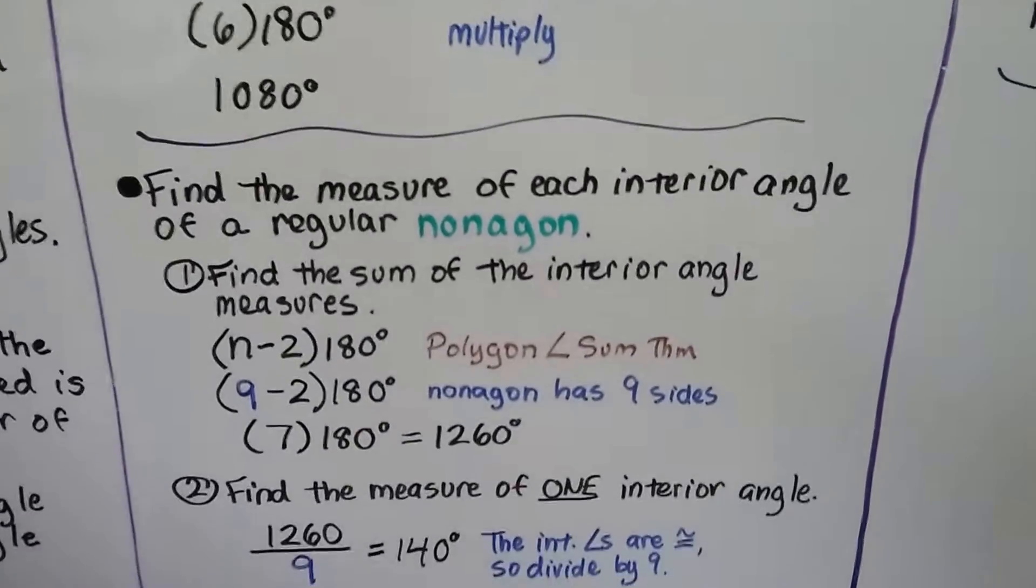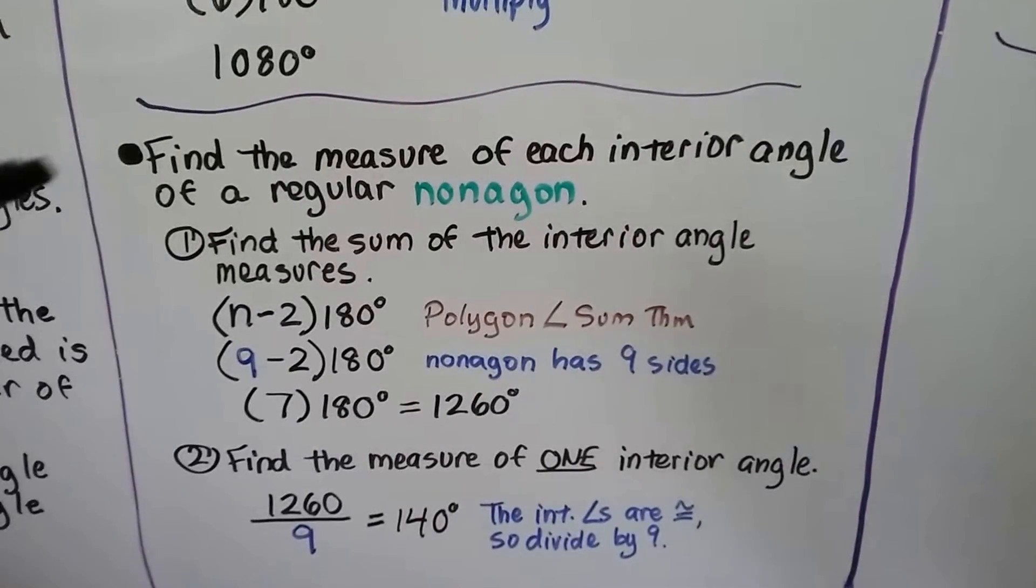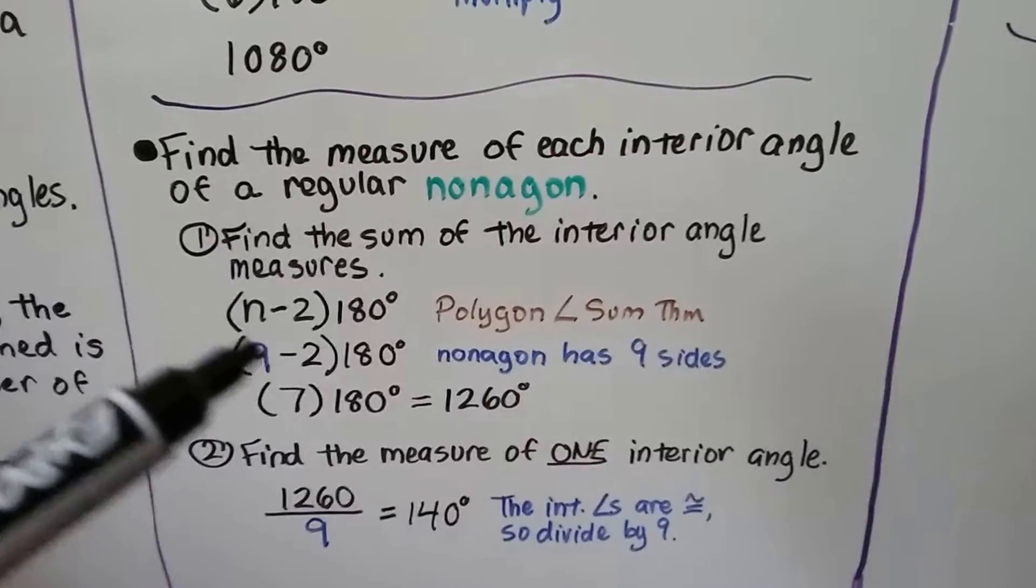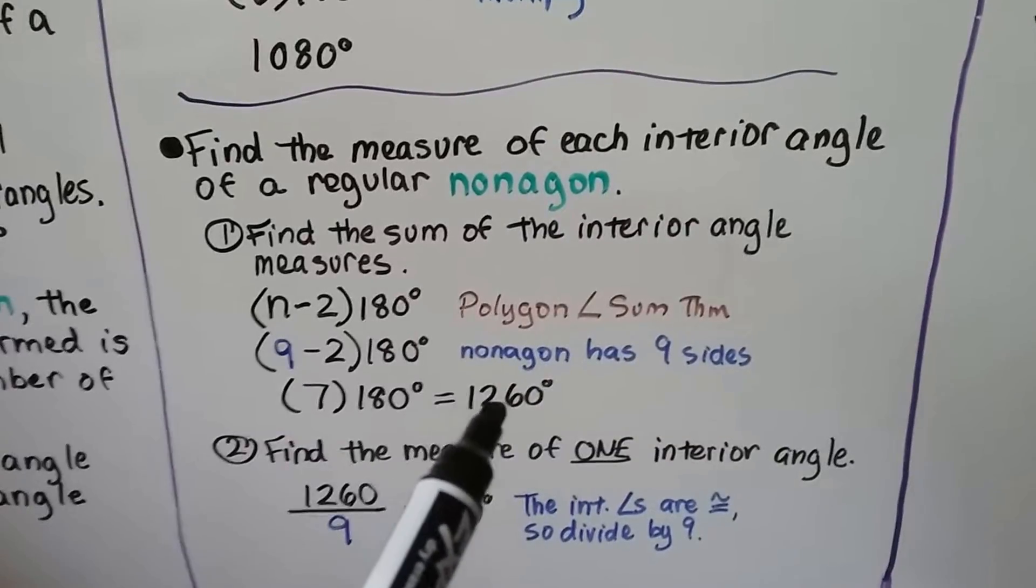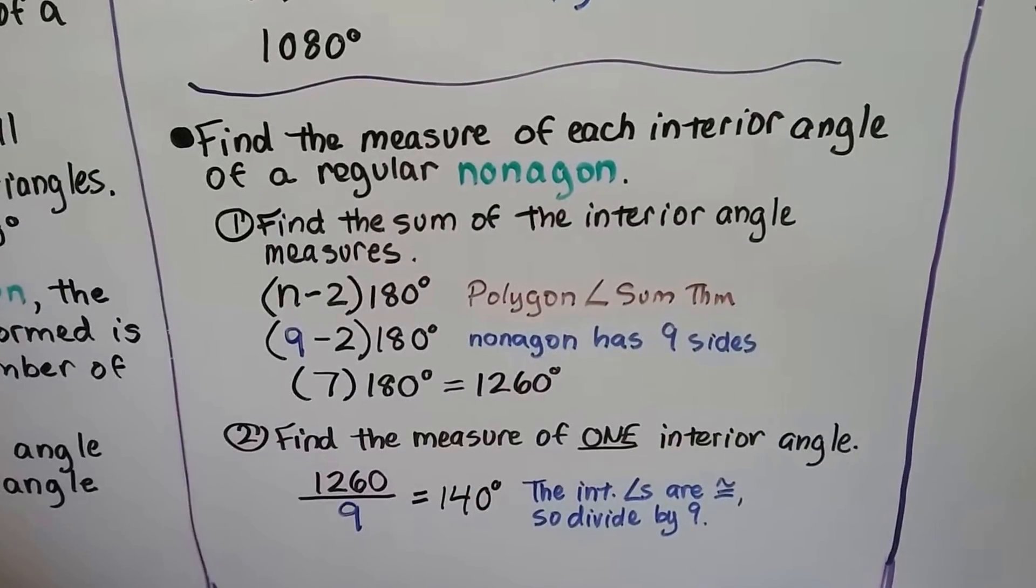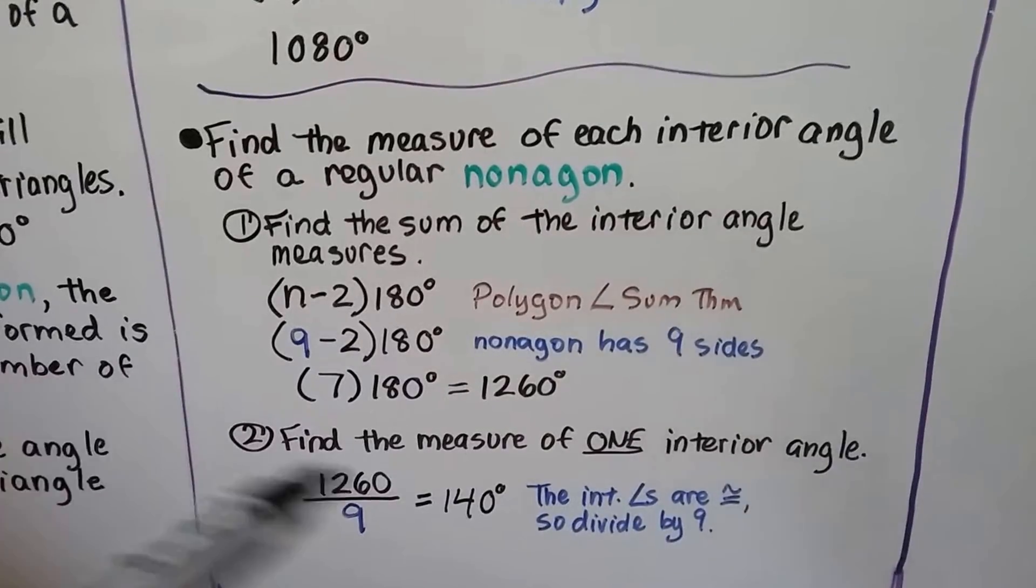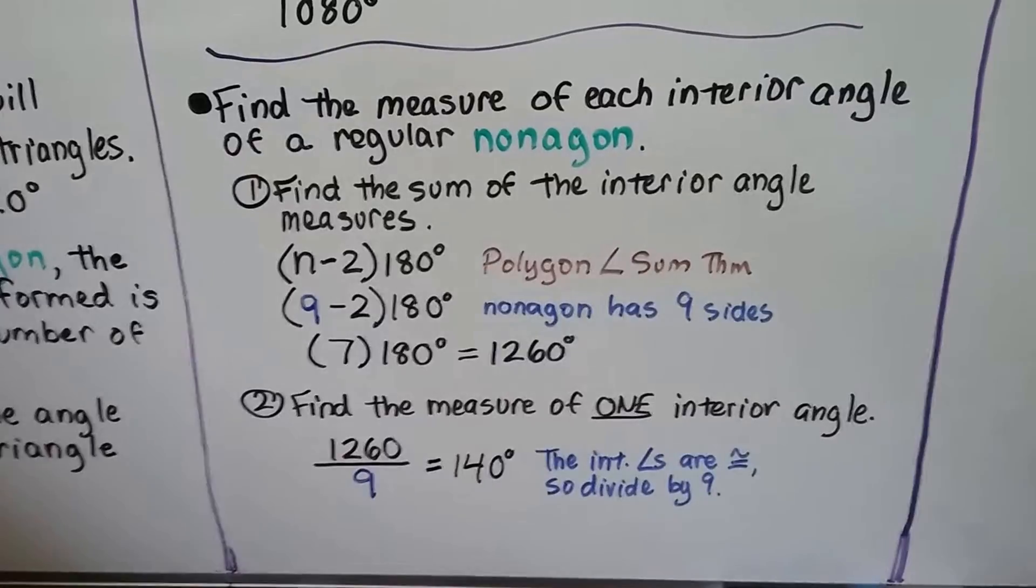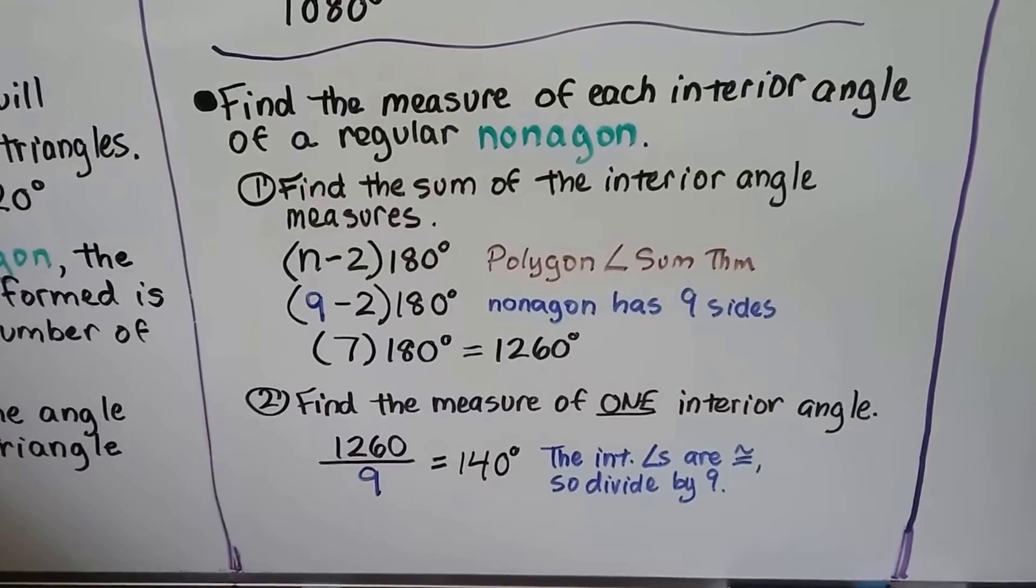We can find the measure of each interior angle of a regular nonagon. A nonagon has nine sides. First we find the sum of the interior angle measures using the polygon angle sum theorem. Nine minus two is seven, seven times 180 degrees gives us 1260 degrees. It's a regular nonagon, and a regular polygon has equilateral and equiangular properties, so this would be divided by nine, and our quotient would be 140 degrees, one interior angle measure of a nonagon.